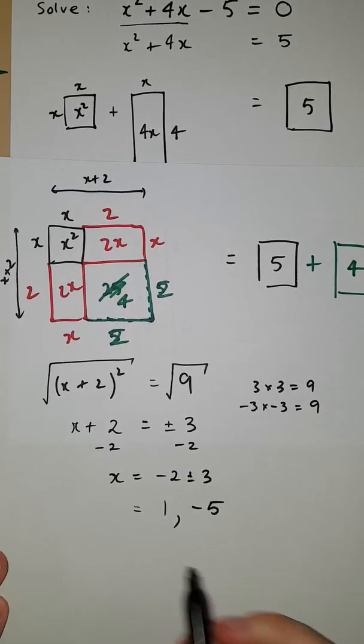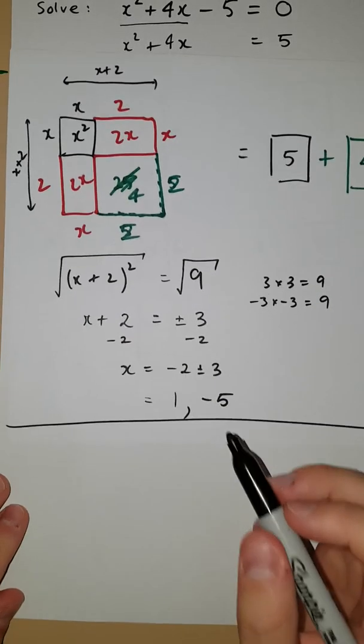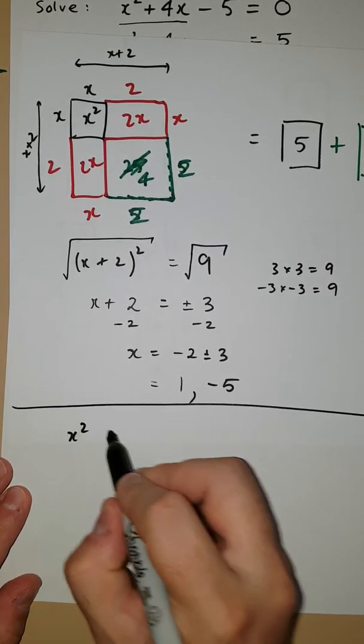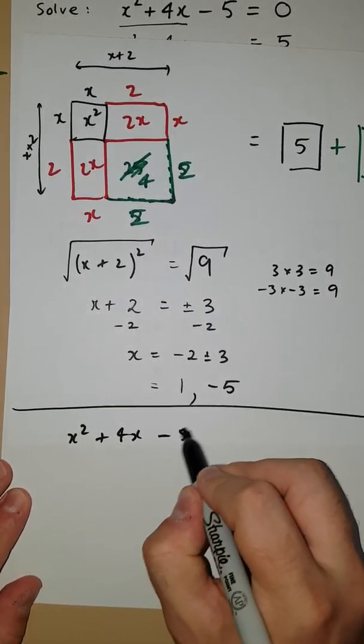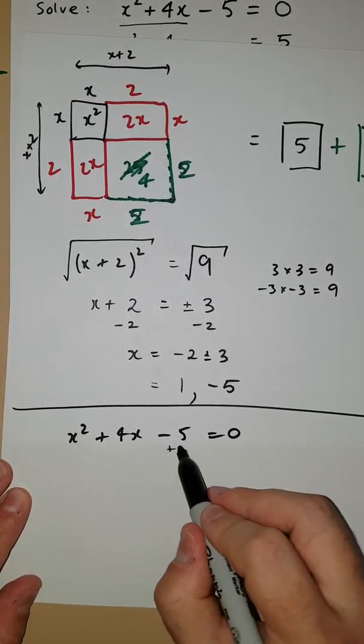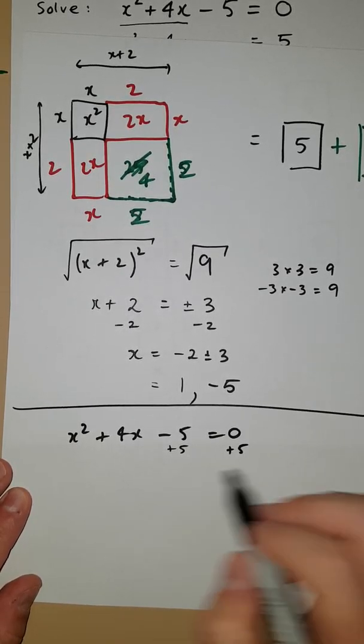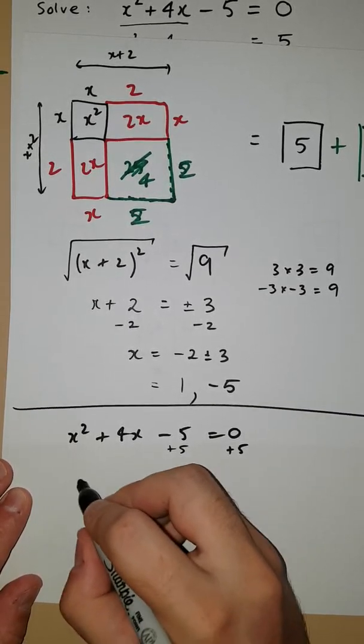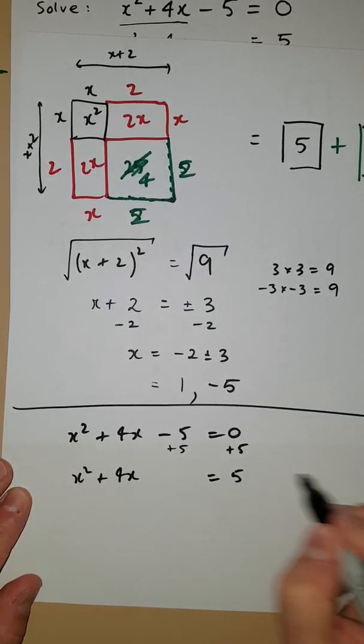In a non-graphical way, again, I'll start with the original equation, which was x² + 4x - 5 = 0. So we add the 5 to both sides, we end up with x² + 4x = 5.